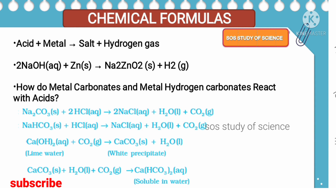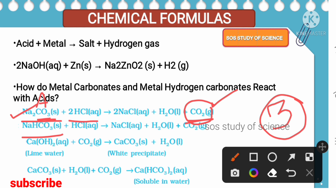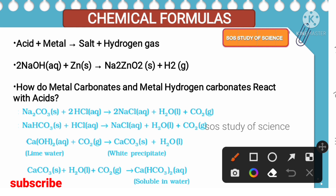Next concept: how do metal carbonates and metal hydrogen carbonates react with acid? This concept has a chance of being asked for 3 marks, so you must learn it. When any metal carbonate reacts with an acid, the gas released turns lime water milky white — that is the hint. This means carbon dioxide is 100% released.